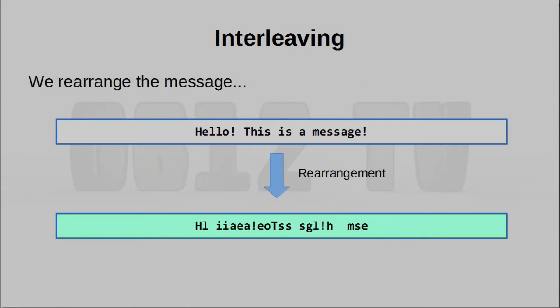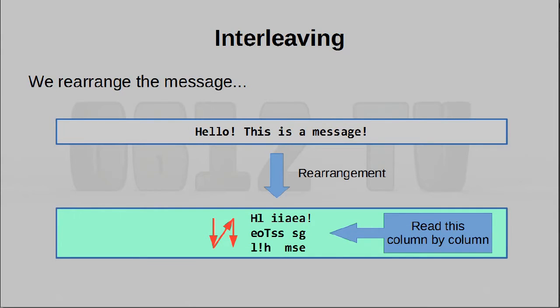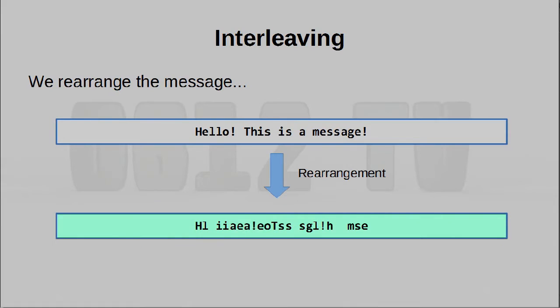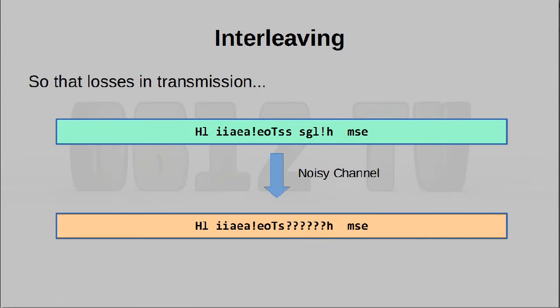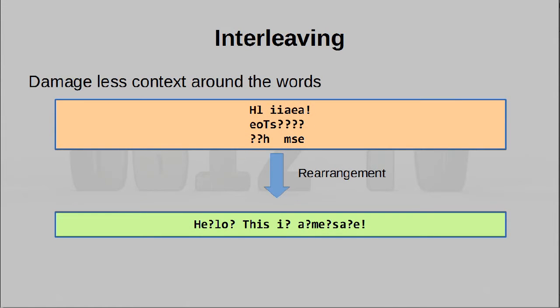Since we assume that errors happen in this manner, what we can do is actually rearrange the message so that it is interleaved. What I've done is picked every third character and interleaved them together to create this sort of code-like message. Now imagine what happens if the same sort of error actually hits it. True, we still lose a chunk of information, but when we rearrange the data back into its correct order, we realize that the errors have actually been spread out throughout the message.